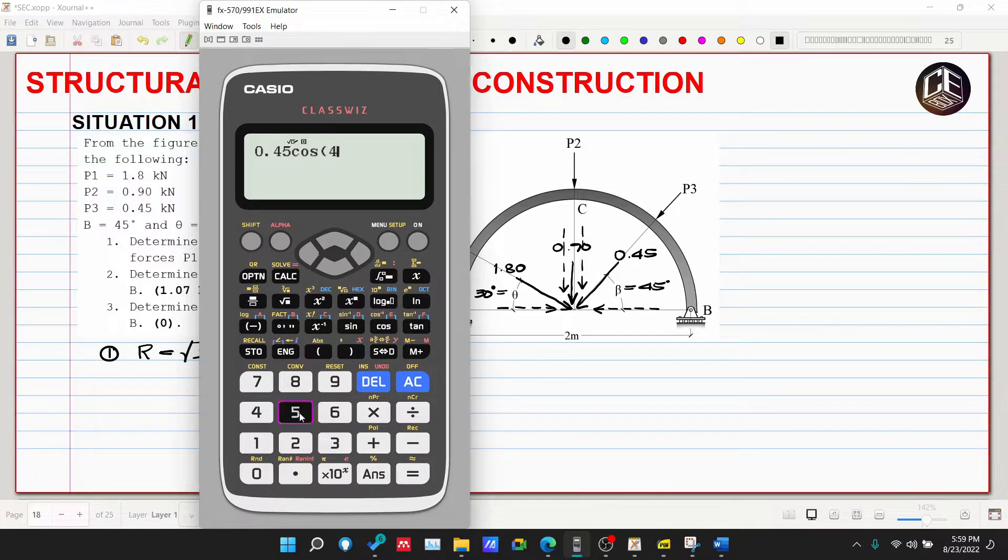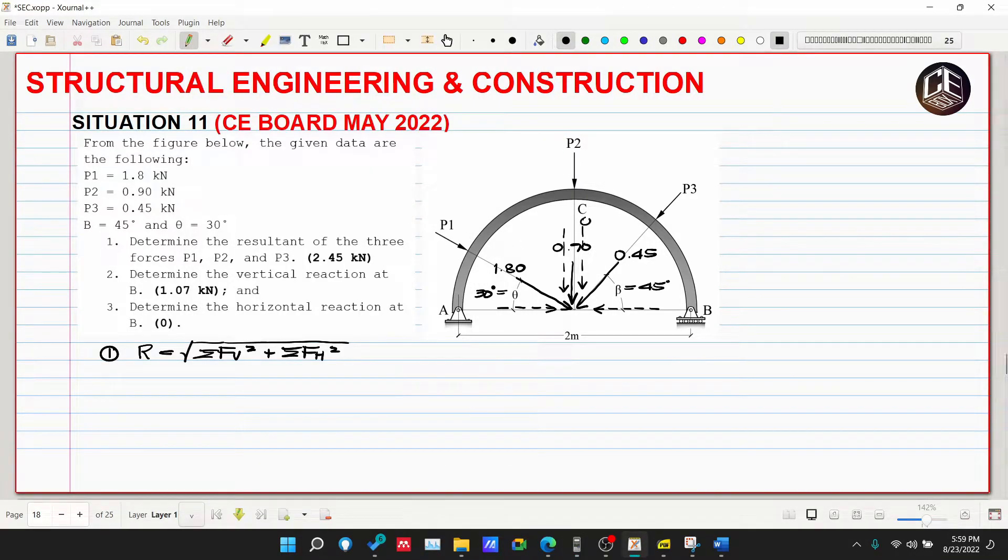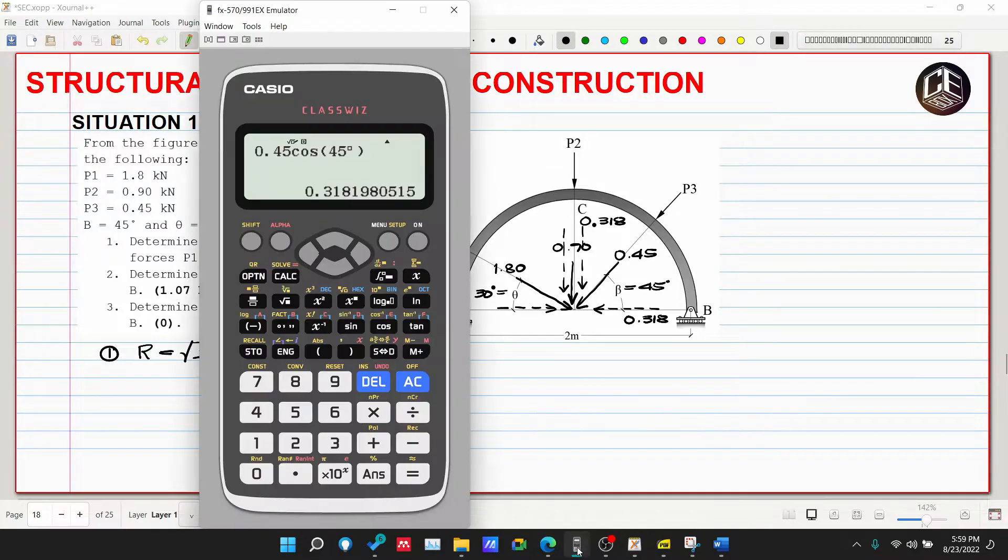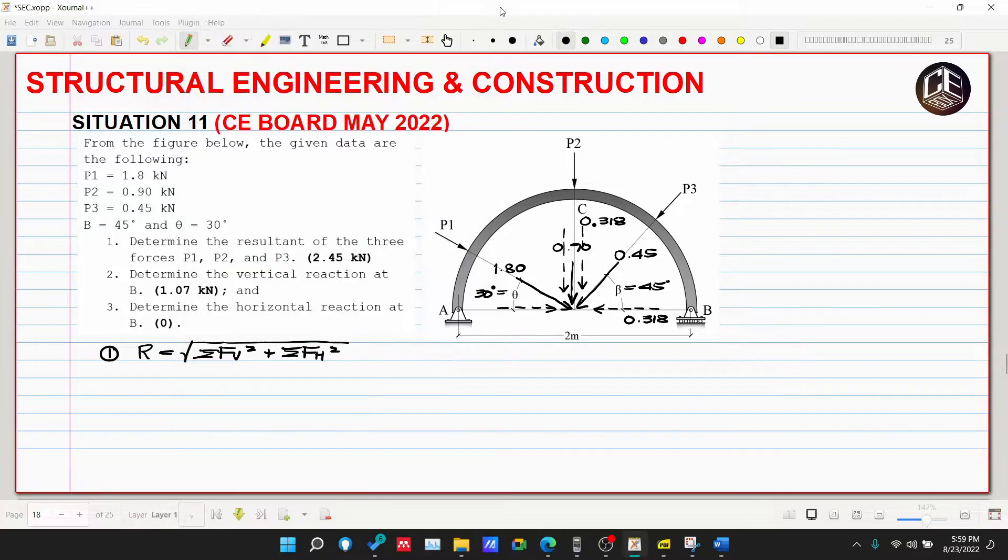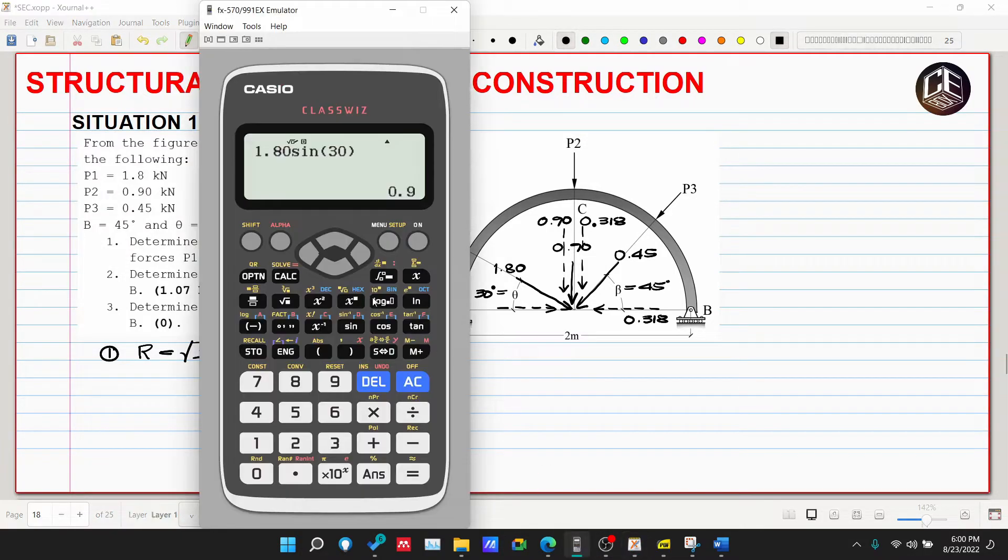Sa 1.80 naman, ang kanyang vertical is opposite sa kanyang 30 degrees or sa inclination, so ang opposite therefore 1.80 times sine of 30 degrees, so this is 0.90. Then kanyang horizontal component naman ay adjacent sa 30 or cosine, 1.559.